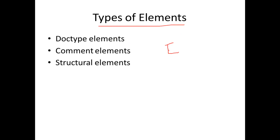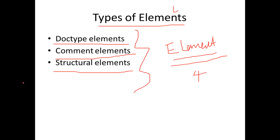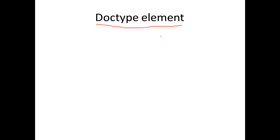There are three types of elements in HTML. The first one is Doctype Elements, the second is Comment Elements, and the third is Structural Elements. So, what are the three types of elements we are going to look at? First one is Doctype Elements.